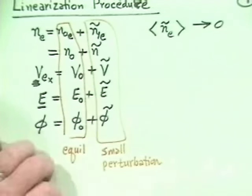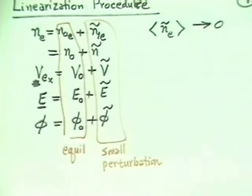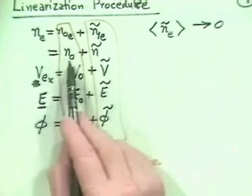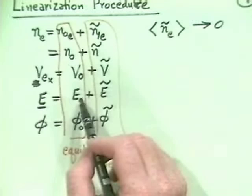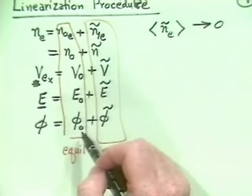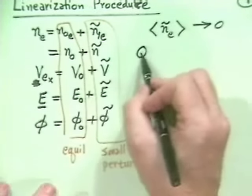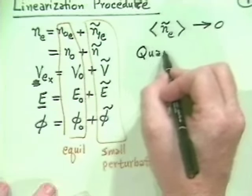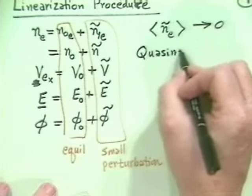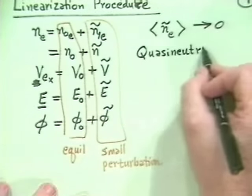We're just assuming it's small. If we don't assume it's small, we'd have to do a nonlinear analysis. Now, we've allowed an awful lot of generality here. An equilibrium density, an equilibrium flow, an equilibrium electric field, and an equilibrium potential. But really, it's much simpler just for a quasi-neutral equilibrium to neglect a bunch of these things.